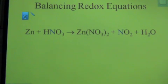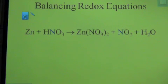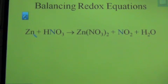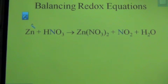In this lesson, I'm going to learn how to balance redox reactions using the oxidation number method. The first thing we have to do is assign oxidation numbers to each element within this equation. Starting on the reactant side with zinc — anytime you have a free element, it's going to have an oxidation number of zero. So zinc here has an oxidation number of zero.